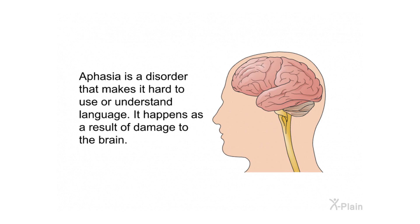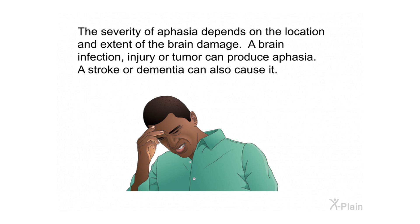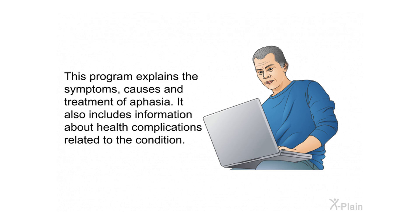Aphasia is a disorder that makes it hard to use or understand language. It happens as a result of damage to the brain. The severity of aphasia depends on the location and extent of the brain damage. A brain infection, injury, or tumor can produce aphasia. A stroke or dementia can also cause it.